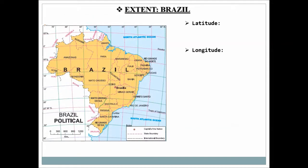Similarly, we study the extent of Brazil — its latitudinal and longitudinal extent. Latitudinal extent refers to horizontal lines and longitudinal extent to vertical lines. For Brazil's latitudinal extent, we start from the north part because it is nearest to the equator. For longitudinal extent, we start from the eastern part because it is closest to the prime meridian.